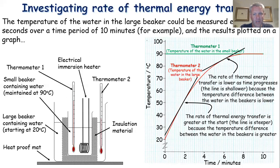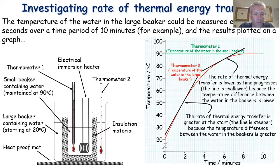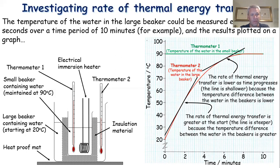As time goes on, the gradient of the line gets shallower because the rate of thermal energy transfer decreases as the temperature difference between the beakers becomes smaller. This has real applications for buildings: if you have a very warm building on a very cold day you will lose heat more quickly and need better insulation. For example, you might draw curtains earlier in the evening to prevent thermal energy transfer from the warm room to the cold outside.